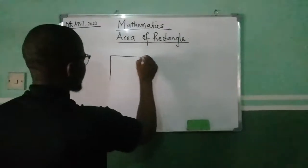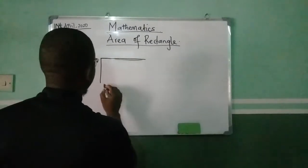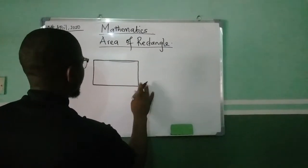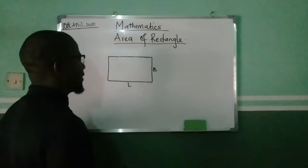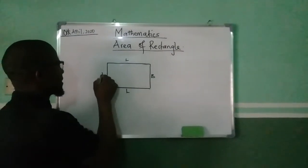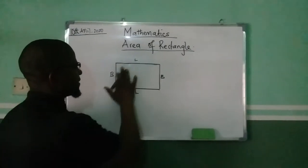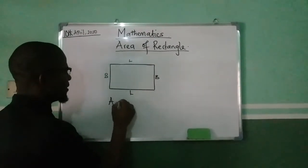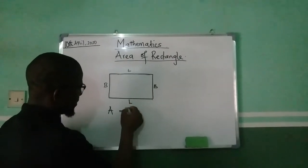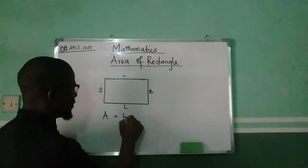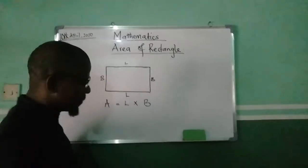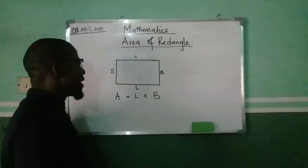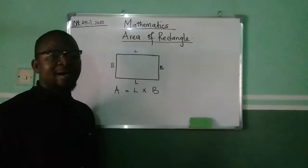I hope we are together. Now, very quickly, if I have a rectangle like this — this is my rectangle. Usually, there are two dimensions used to describe a rectangle: length and breadth. The measure of its surface is what is referred to as the area. And the area of a rectangle is obtained by multiplying the length with the breadth. The area is length times breadth.